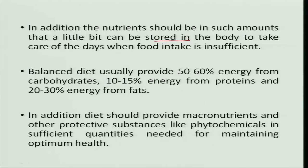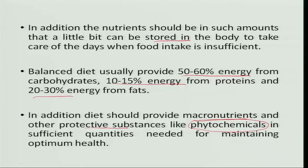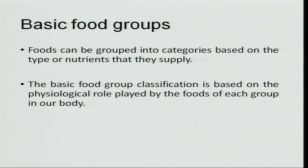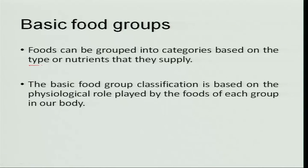Under such conditions these stored amounts will be of use. A balanced diet usually provides 50 to 60 percent of energy from carbohydrates, 10 to 15 percent from proteins, and 20 to 30 percent from fats. In addition, the diet should provide macronutrients and other protective substances like phytochemicals, which are very useful in protecting us against various diseases so that we have optimum health. To know the balanced diet, you have to include foods from all the food groups.